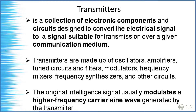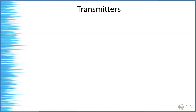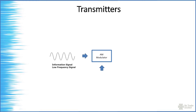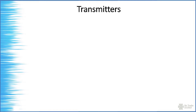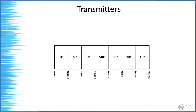The original intelligence signal usually modulates a higher-frequency carrier sine wave generated by the transmitter — this is where the term modulation comes in. A modulator has two inputs: the information signal, which is low frequency, and the carrier, which is high frequency and carries no information on its own — it is just a carrier. The output is called the modulated wave. Voice frequency is 300 Hz to 3000 Hz, while the carrier for amateur radio is in the megahertz range — 10 MHz, 30 MHz, and above.